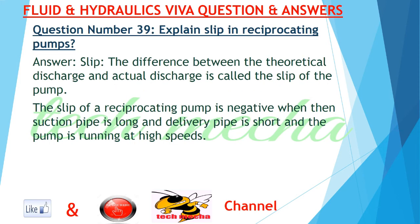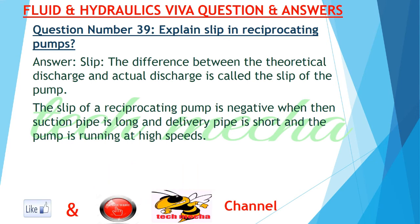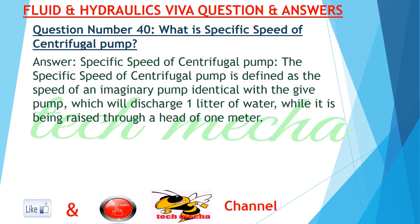Question number 39: Explain slip of reciprocating pumps. Answer: Slip — the difference between the theoretical discharge and actual discharge is called the slip of the pump. The slip of a reciprocating pump is negative when the suction pipe is long, the delivery pipe is short, and the pump is running at high speeds. Question number 40: What is the specific speed of a centrifugal pump? Answer: The specific speed of centrifugal pump is defined as the speed of an imaginary pump identical with the given pump, which will discharge one liter of water while it is being raised through a head of one meter.